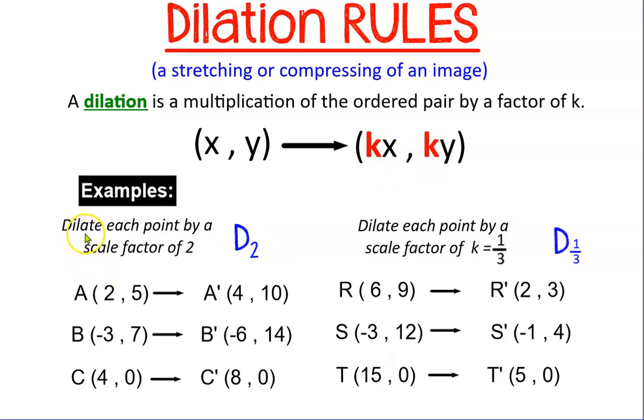A dilation is a multiplication of the ordered pair by whatever that factor, that mystery k number is. So if my first example says to dilate each point by a scale factor of 2, or dilate by 2, I simply take my original points and I multiply all of them by 2. 2 times 2, 5 times 2, negative 3 times 2, 7 times 2, 4 times 2, and 0 times 2. That's how I get my new points.